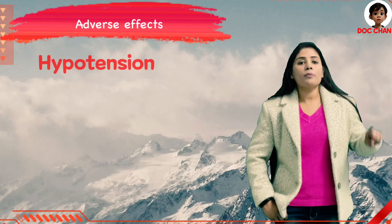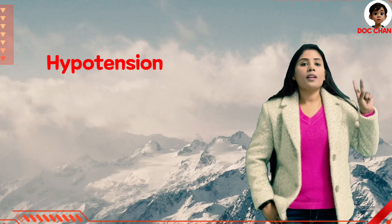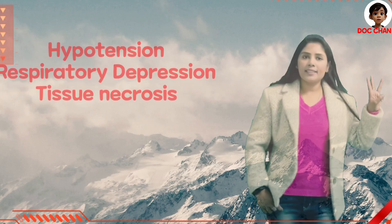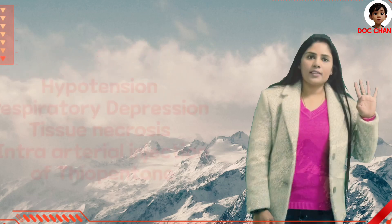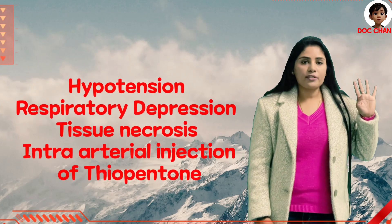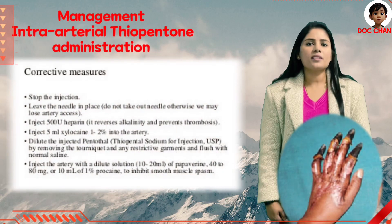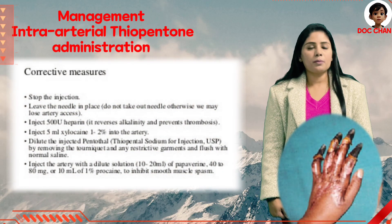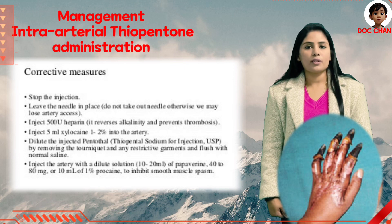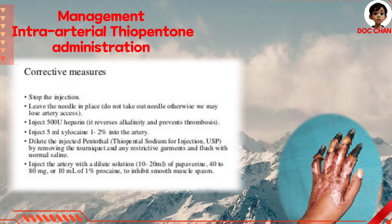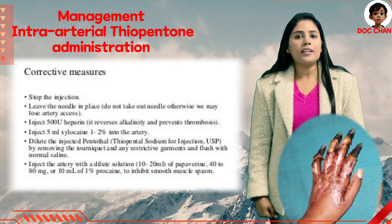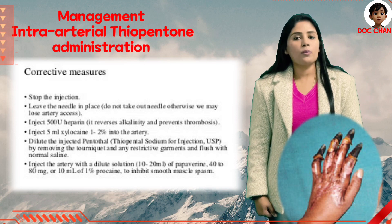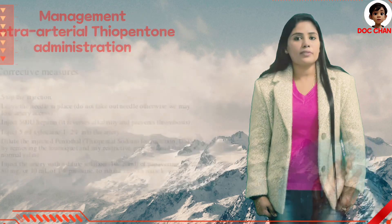It tends to cause hypotension. It causes respiratory depression in larger doses. Thirdly, tissue necrosis. Fourthly, intra-arterial injection of thiopental — in this case, we need to immediately stop the injection and leave the cannula and needle in place. We should flush the line with normal saline or heparinize the line. We should add injection papaverine at the dose of 40 mg. Further, we can add injection lidocaine 1%, 5 ml.